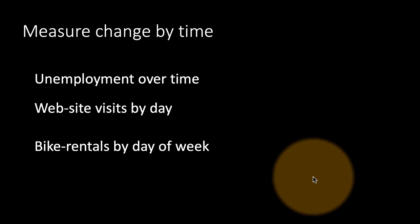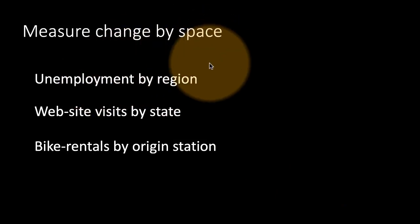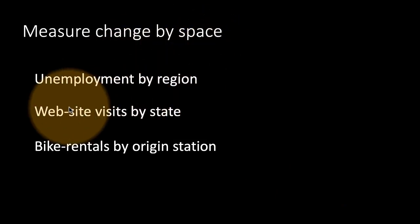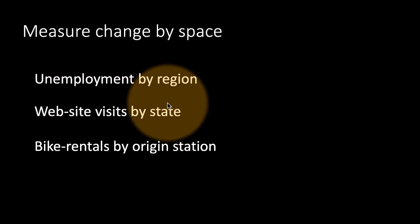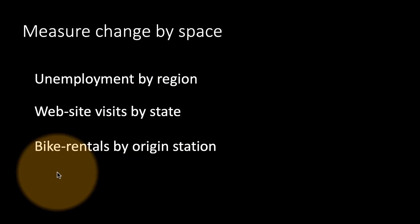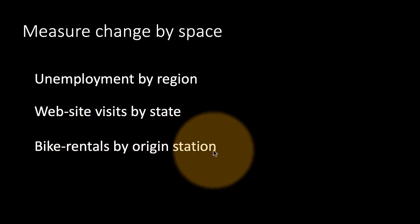Just as with time, you can do all of these over geographical or over space. For example, you can look at unemployment by region, website visits by state or city, or bike rentals by origin station. Whenever you have a variable that represents a measure and another variable in the dataset that has something about the location where it's happening, then you can do this kind of analysis.